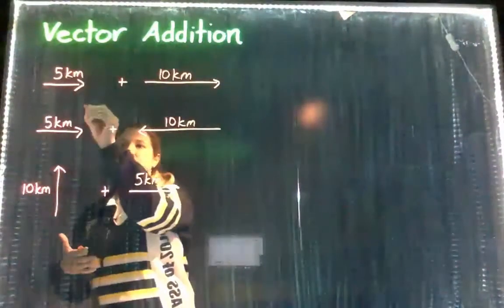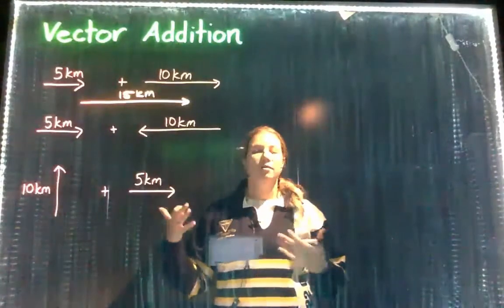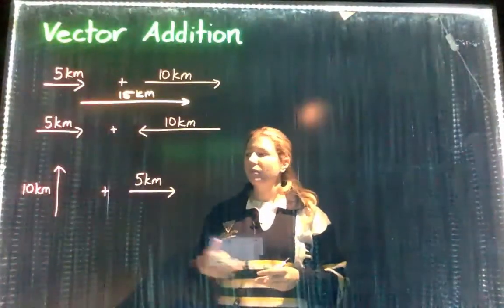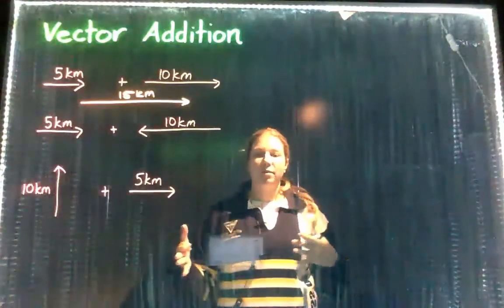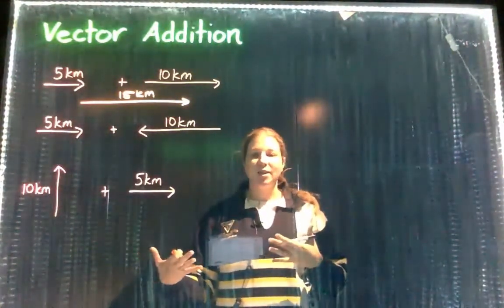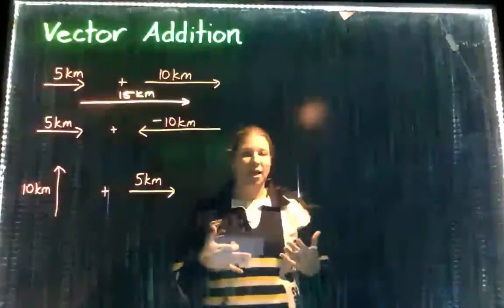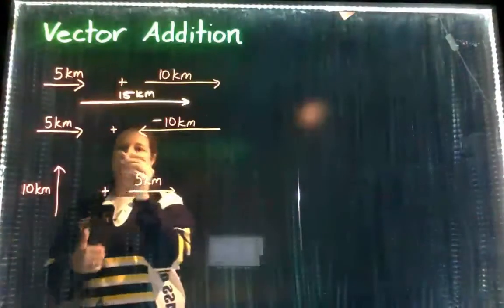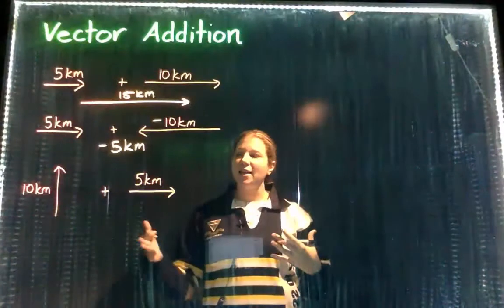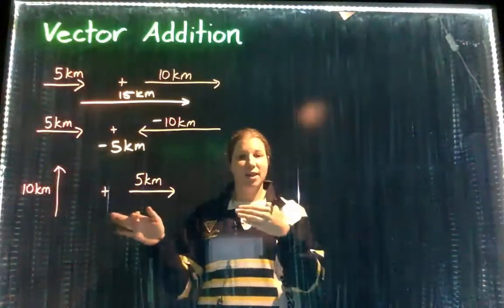So 5 plus 10 is 15, and the resultant vector would be 15 kilometers in the same direction, in the positive direction. Here we have one we've got 5 kilometers in the positive direction and then 10 kilometers in the negative direction, so that is like saying you're adding negative 10. So 5 take away 10 is negative 5, and that negative indicates the direction. So the resultant vector would actually be going in the negative direction.